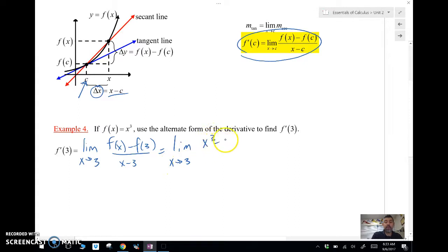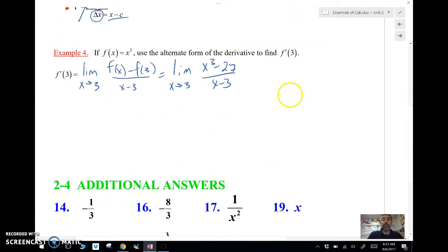x cubed minus, that's going to be 3 times 3 times 3, 27, over x minus 3. Now, there are a couple of ways that we can do this here.